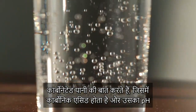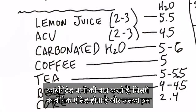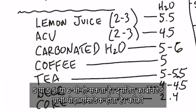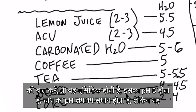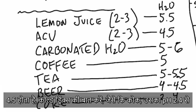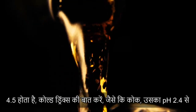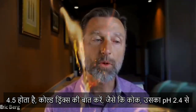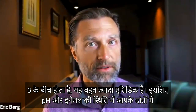Carbonated waters have carbonic acid and that could fluctuate between 5 to 5.5, maybe even 6 — so carbonated water is slightly acidic. Coffee is acidic at about pH 5. Tea is roughly the same, maybe a little bit less acidic at 5 to 5.5. Beer is acidic at 4 to 4.5. And soft drinks like Coke are roughly between 2.4 to 3, which is actually very, very acidic.